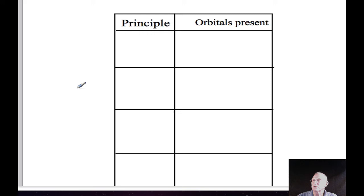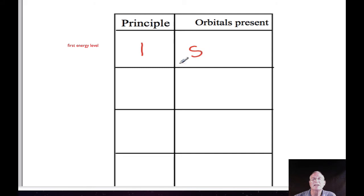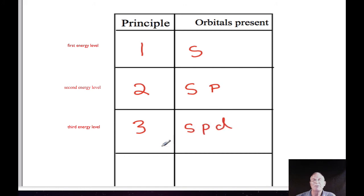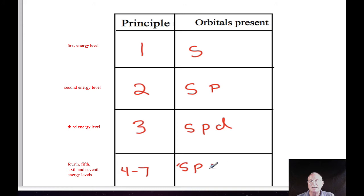The first two quantum numbers relate to each other as follows. When the principal quantum number is one, or the electron is in the first energy level, the only type of orbital present is an s-orbital — there's no such thing as a 1p, 1d, or 1f orbital. If the principal quantum number is two, the electron can occupy an s-orbital or a p-orbital. In the third energy level, we add another type: s, p, and d orbitals are possible. Finally, in the fourth through seventh energy levels, all four types — s, p, d, and f — may be present.